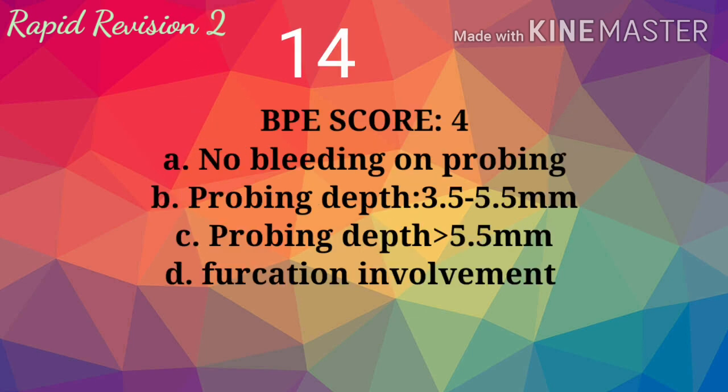BPE Score 4: A. Bleeding on probing. B. Probing depth 3.5 to 5.5 mm. C. Probing depth greater than 5.5 mm. D. Furcation involvement. Answer is C: probing depth greater than 5.5 mm.